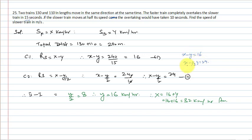Subtracting the first equation from the second: (x − y/2) − (x − y) = 24 − 16, giving y/2 = 8, so y = 16 meters per second. Note: since all values were in meters per second, this is the speed of the slower train in meters per second. This is the answer.